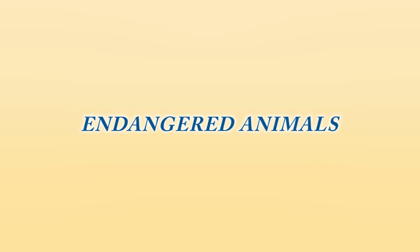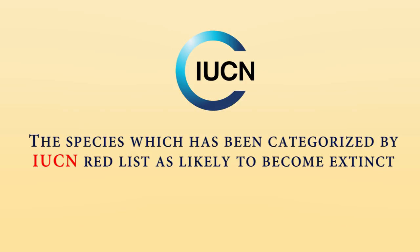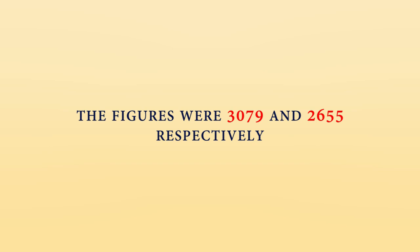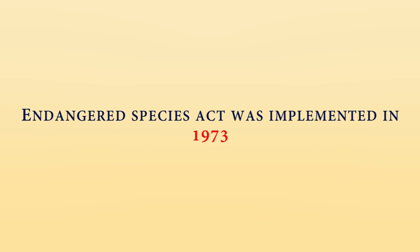So what are Endangered Animals? The species which have been categorized by IUCN Red List as likely to become extinct. Endangered is the second most severe conservation status of wild populations in the IUCN scheme, after critically endangered. The IUCN Red List features 1,102 animals and 1,197 plant species as endangered, whereas in 2012 the figures were 3,079 and 2,655 respectively.